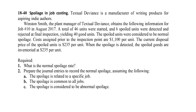Exercise 18-40: Spoilage in job costing. The company provides information for job 10 in August 2017. A total of 46 units were sorted and 6 spoiled units were detected, yielding 40 good units. The spoiled units were considered to be normal spoilage, and the current disposal price of the spoiled units is $235 per unit. Required: find the normal spoilage rate, then prepare journal entries assuming the spoilage is related to a specific job, common to all jobs, or considered abnormal spoilage.